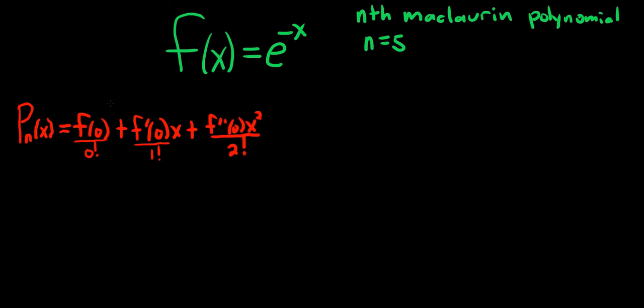You can also think of an x to the 0 here. So it does kind of follow a pattern. So f triple prime of 0 over 3 factorial x cubed, plus all the way to the n-th derivative at 0 over n factorial times x to the n. And so what this does is this approximates our function when x is close to 0.